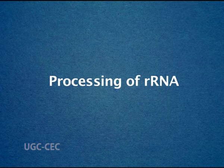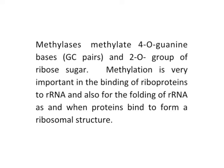Most RNAs transcribed are precursor RNAs and have to be processed to their functional state. Ribosomal RNAs are synthesized as a large precursor and, as they are synthesized, they are subjected to processing which involves methylation and pseudo-uridylation of bases at specific sites using secondary structural conformations, then cleaving the precursor transcript at specific positions. Methylases methylate 4-O-guanine bases, GC pairs, and 2-O groups of ribose sugar. Methylation is important in the binding of riboproteins to ribosomal RNA and for the folding of ribosomal RNA as proteins bind to form a ribosomal structure.